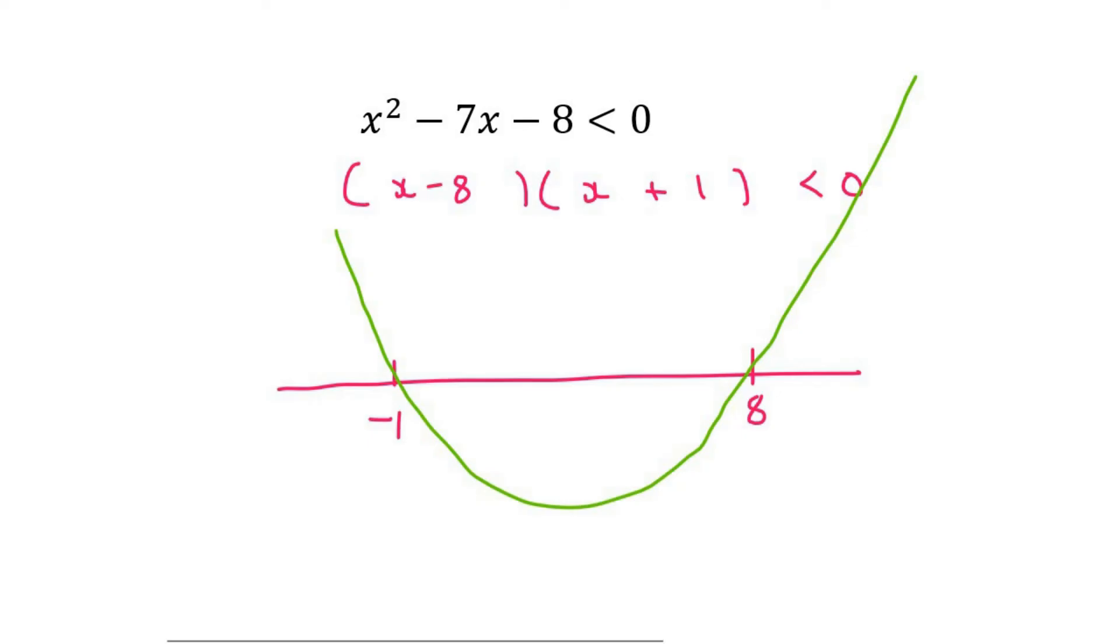What that means for a graph is, when they say where is the graph negative, it means underneath. So that means it's underneath over here, and your answer is going to be from -1 up to 8. It's going to be inside that interval.